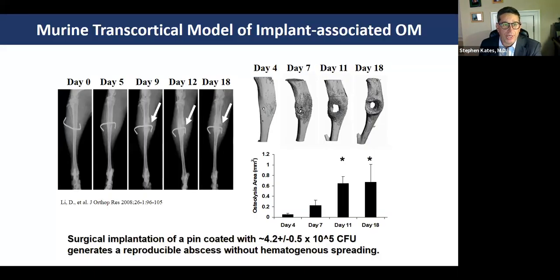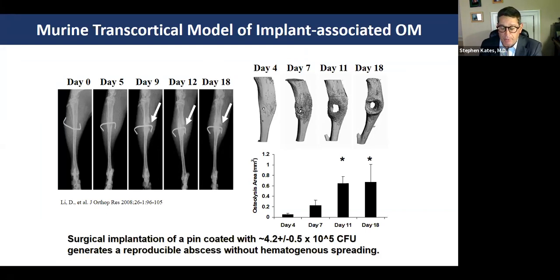We have to create a model that replicates the human condition in bone. This is an in vivo model — not a petri dish model — this is in a mouse. The implant is a little wire about the size of a 29-gauge needle pushed through the bone of a mouse tibia. You can see how the progression causes a reproducible osteomyelitis, and the mouse doesn't get sick or die. We've done about 8,000 of these in the lab now, so it's a very reproducible operation.